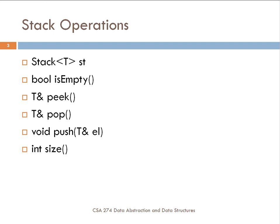These particular operations are slightly different from those in the textbook, but they are still the standard kinds of operations you would have with a stack. We will implement the ones shown here for your class assignment. The first operation is the constructor for creating a new stack. The second is to check whether or not the stack is empty. The third is to look at the top of the stack without modifying it.